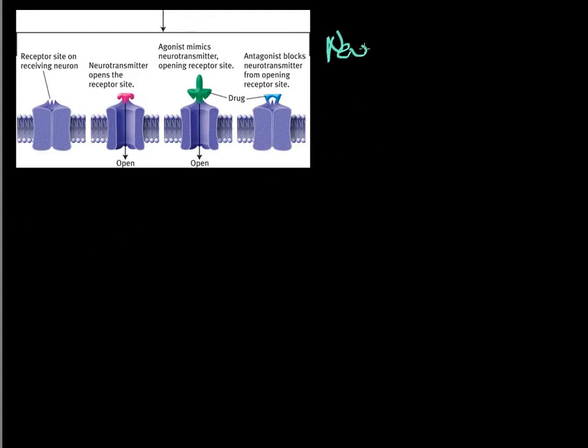We have learned a lot about neurotransmitters, and one of the things we've learned is that we can mimic the effect of these neurotransmitters. Like morphine, for example—it mimics the effect of endogenous morphine. Essentially, what you see in this diagram is the receptor site that exists on the receiving neuron.